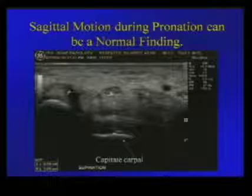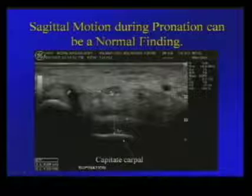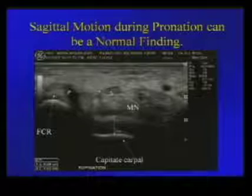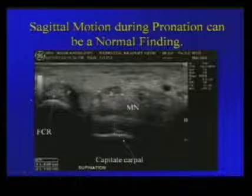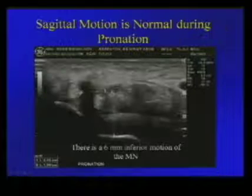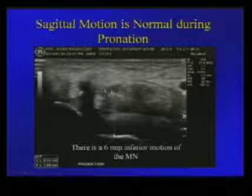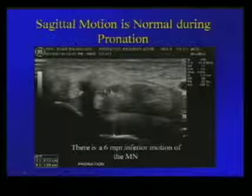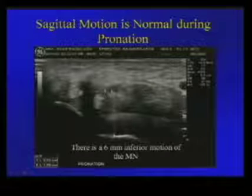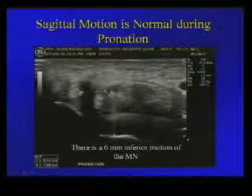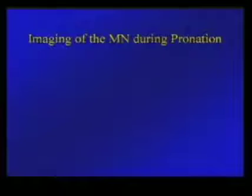Showing that movement relative to the capitate bone: in a normal volunteer, the median nerve and flexor carpi radialis are shown relative to the capitate bone. In this volunteer, there was about six millimeters of dorsal movement of the median nerve relative to the capitate.